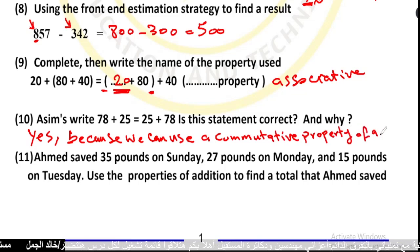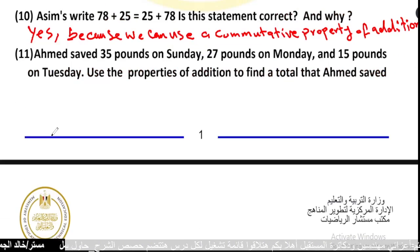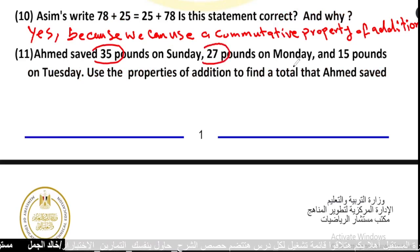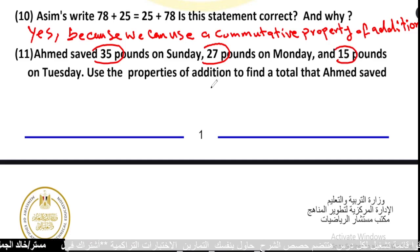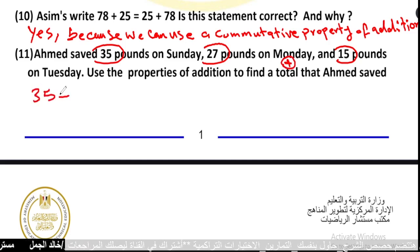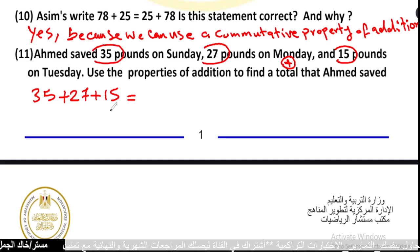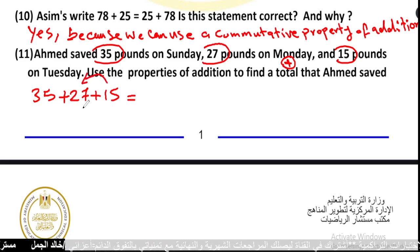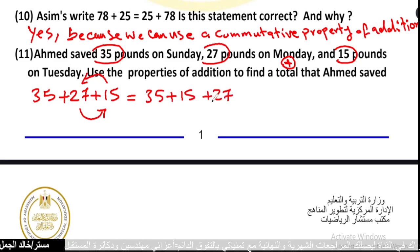Number 11: I collected 35 pounds on Sunday, 27 pounds on Monday, and 15 pounds on Tuesday. Use the properties of addition to find the total. Total means addition: 35 plus 27 plus 15. We can use the commutative property to swap 27 and 15, giving us 35 plus 15 plus 27.